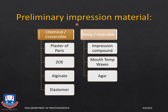Moving to the various preliminary impression materials: preliminary impression materials are used to take first or diagnostic impressions. They are broadly categorized into two categories — reversible or irreversible — based upon their chemical reaction. Irreversible preliminary impression materials include plaster of Paris (POP), zinc oxide eugenol, alginate, and elastomers. Alginate is also known as an irreversible hydrocolloid because it is an irreversible material.